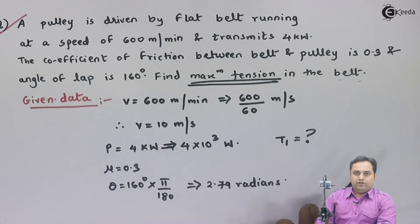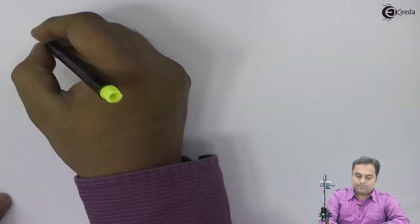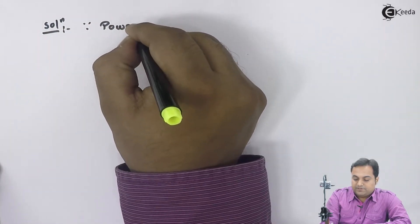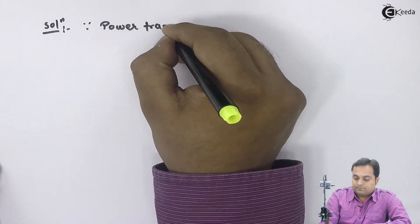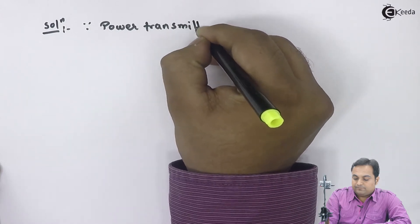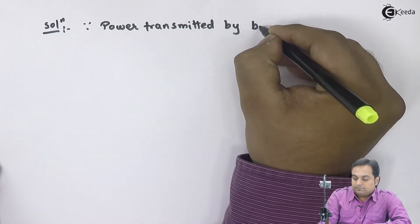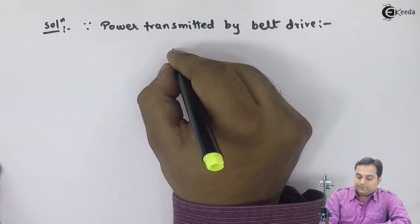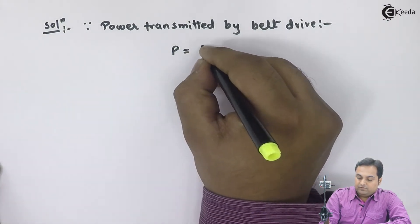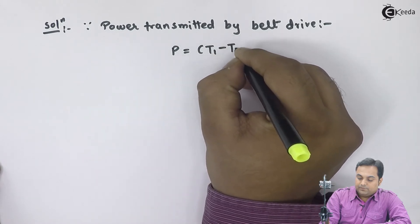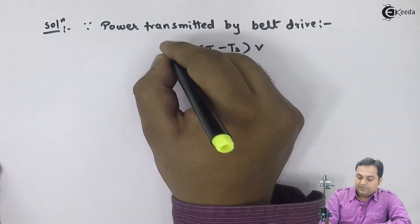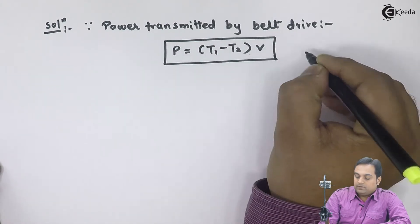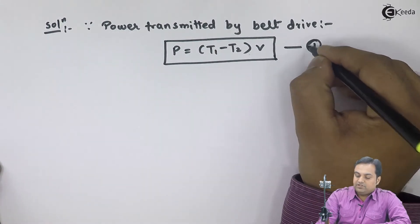We will start from the formula of power. Since power transmitted by belt drive, the power transmitted is given by P equals T1 minus T2 into velocity. I will keep this as first equation.